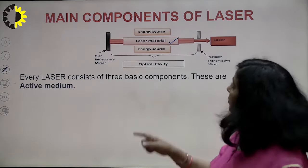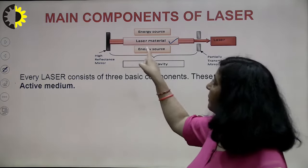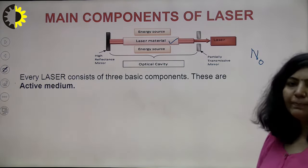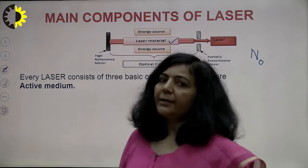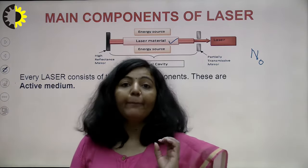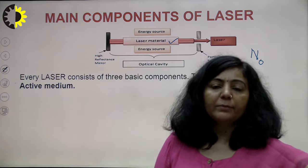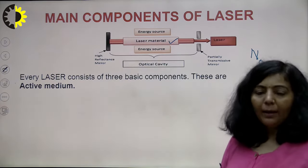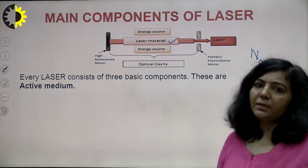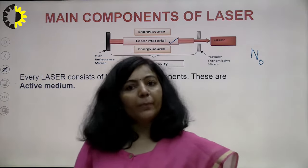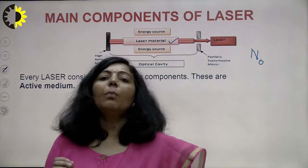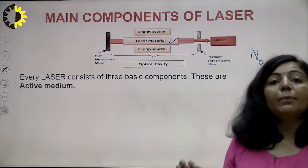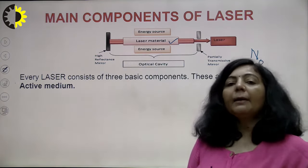The active medium is basically an assembly of atoms where you are going to achieve population inversion. As we have discussed, there are basic processes like stimulated absorption, spontaneous emission, and stimulated emission. That particular assembly of atoms in which you achieve population inversion and amplify light is known as the active medium or laser material. This active medium can be in atomic form, ionic form, or molecular form.